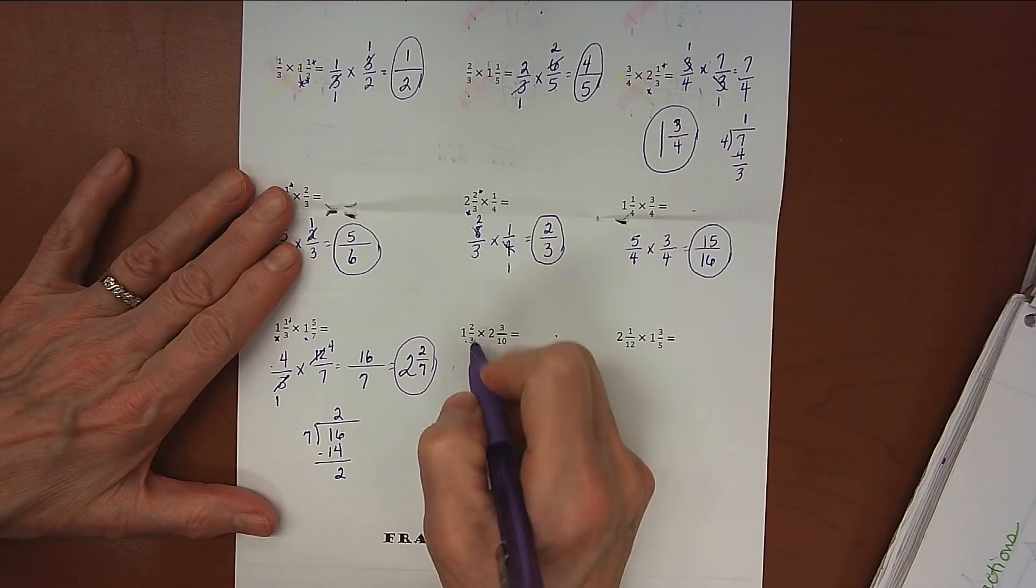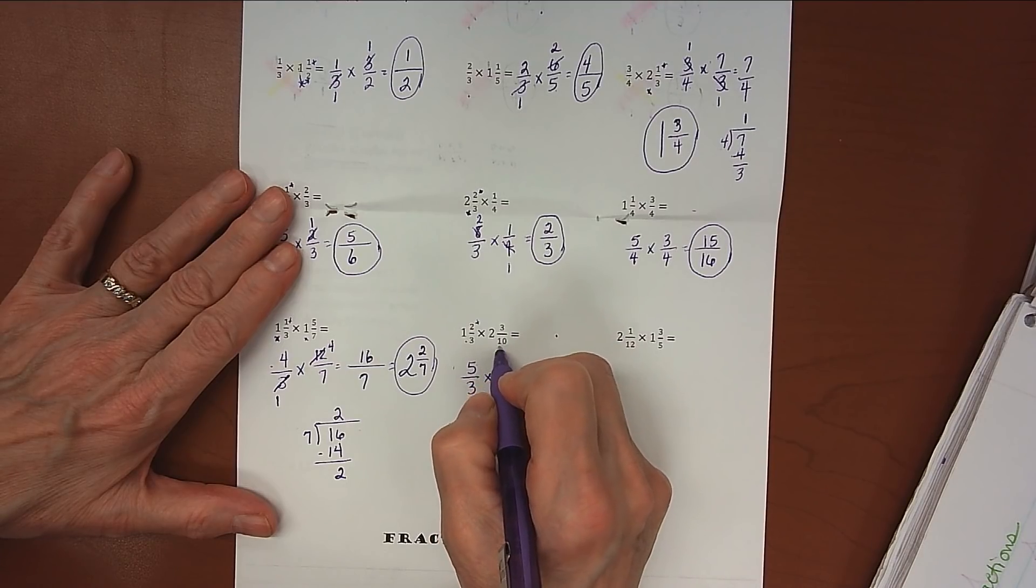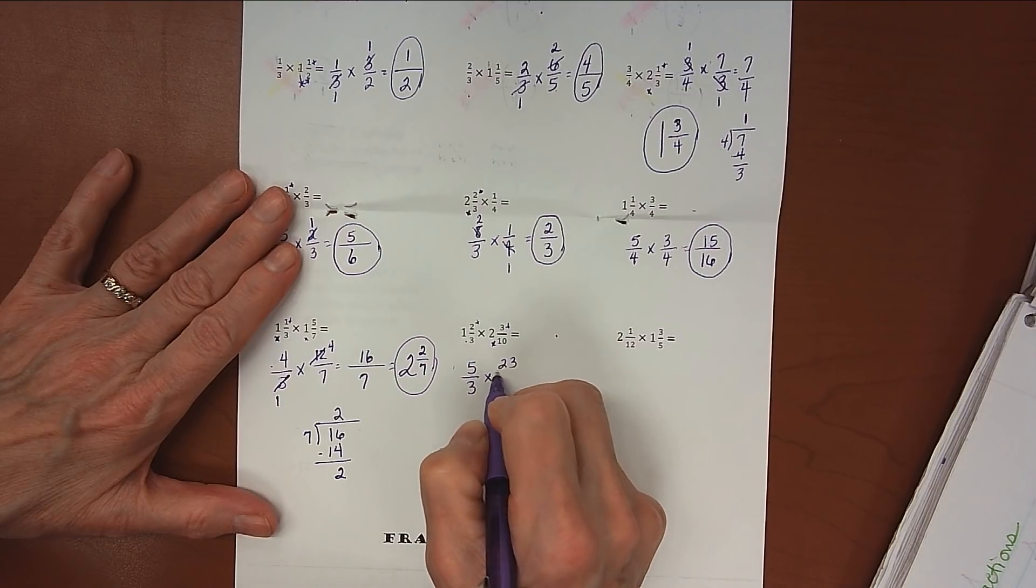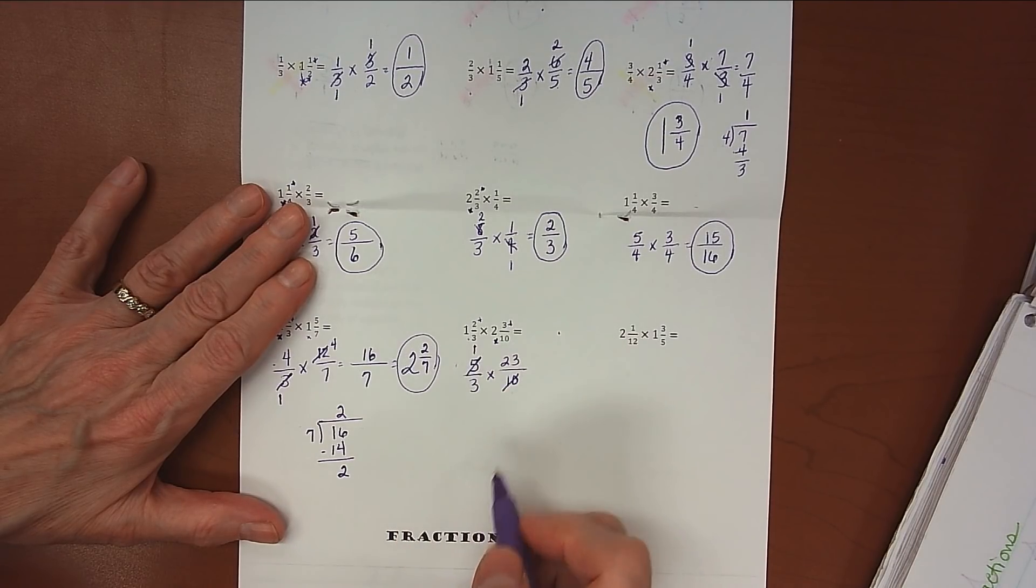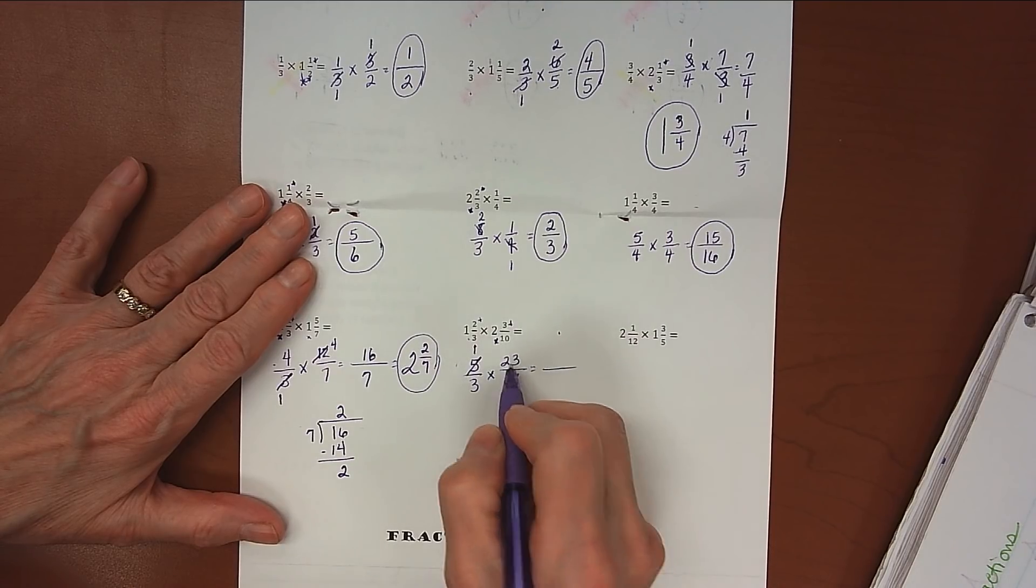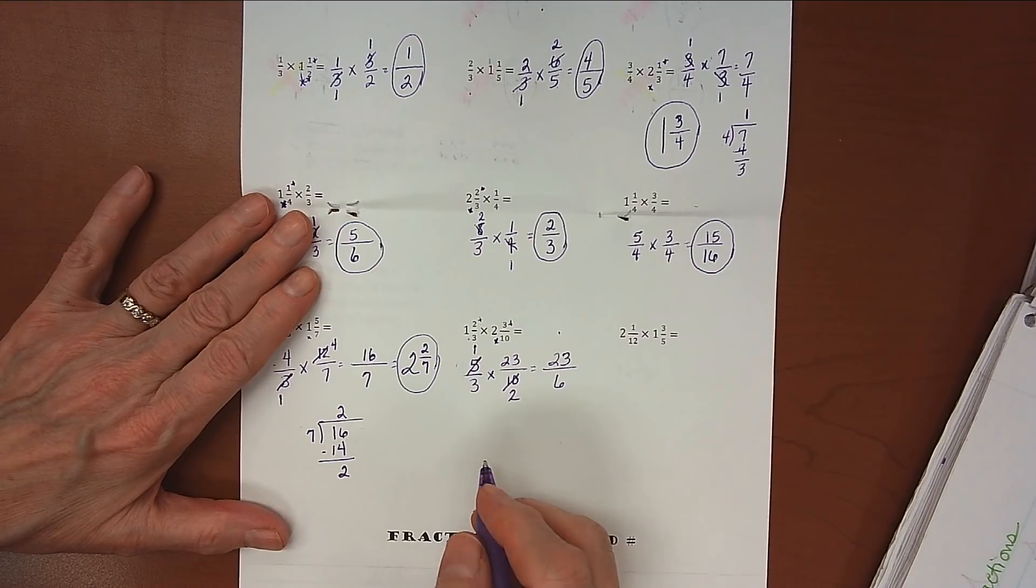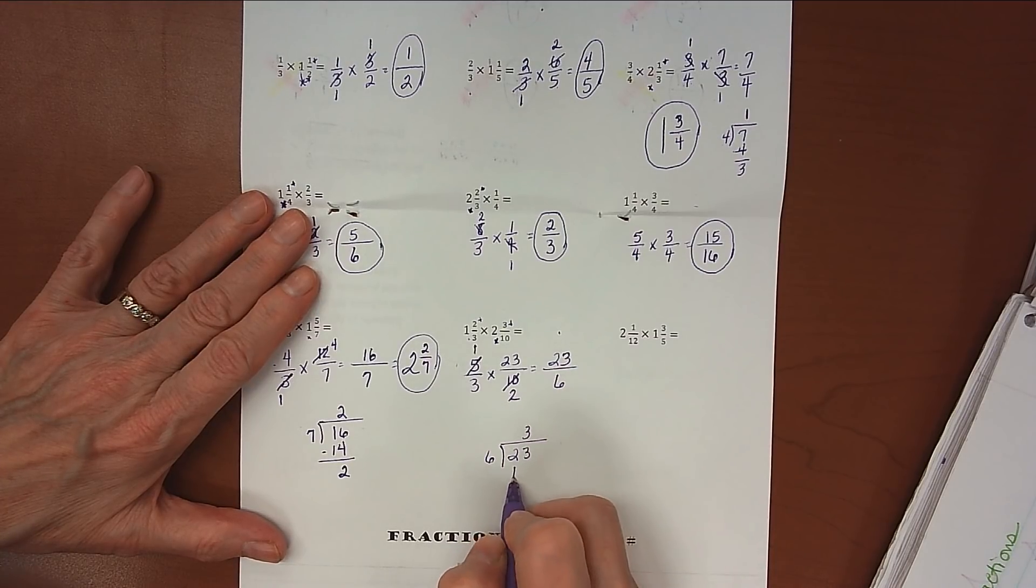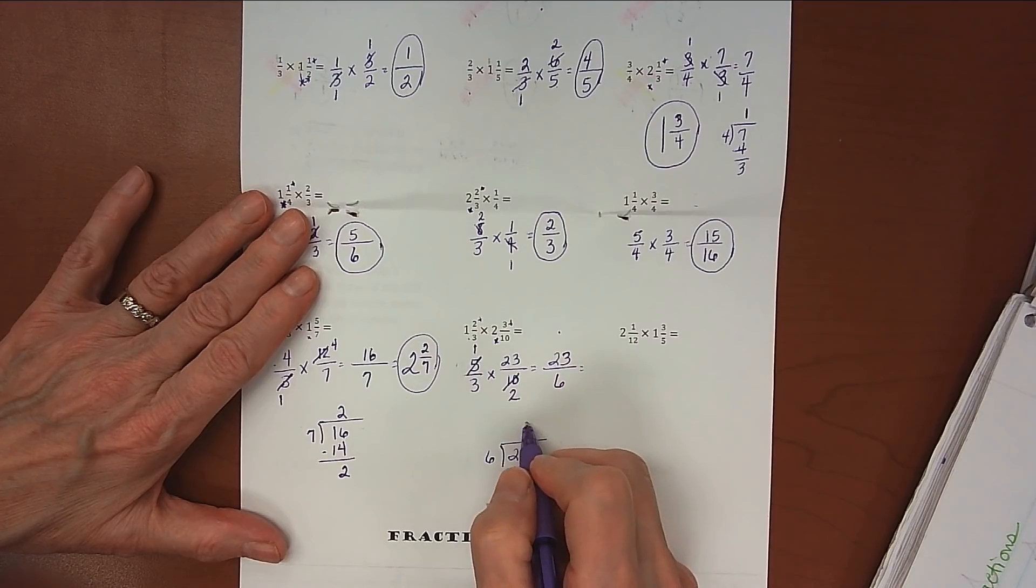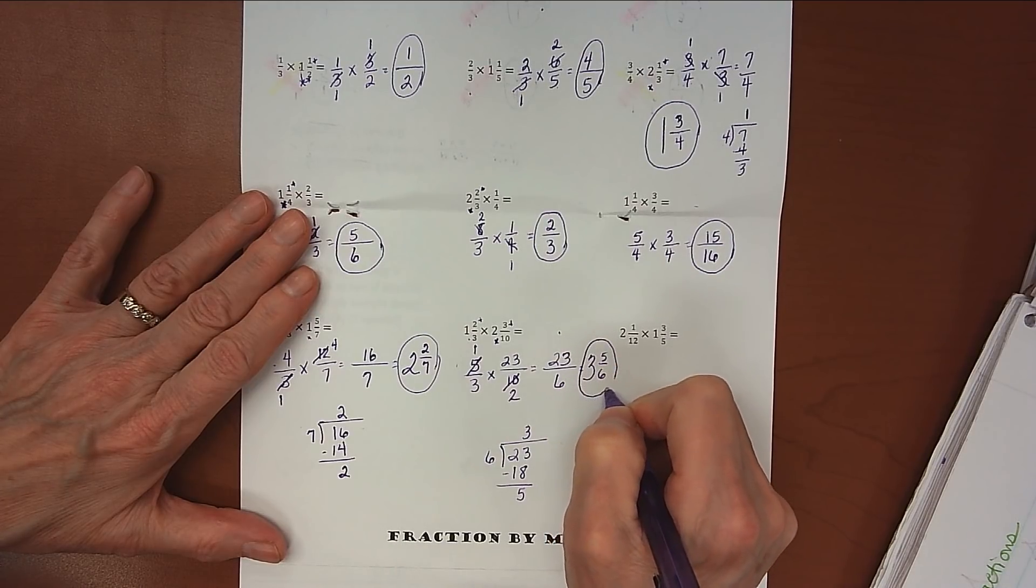Okay, let's look at our next one. 1 times 3 is 3, plus 2 is 5, 5/3 here. 2 times 10 is 20, plus 3 is 23, 23/10. Look for opportunities to cross-simplify. Not here, but here we can divide both of these by 5. 5 divides by 5 once, 10 divides by 5 twice. 23 times 1 is 23, 3 times 2 is 6. And we want to see how many times we can divide 23 by 6. So 3 times 6 is 18, subtract and get 5. And so our answer should be 3 and 5/6. And there's our answer.